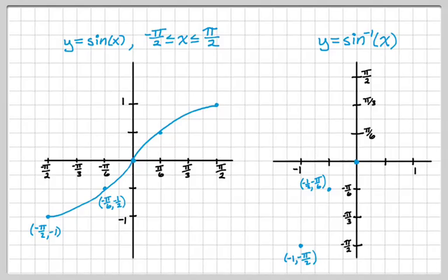And then (0, 0), which I'm not going to label. (π/6, 1/2) gives me the point (1/2, π/6). And then finally, (π/2, 1) is a nice point there, so (1, π/2) will be a nice point here.